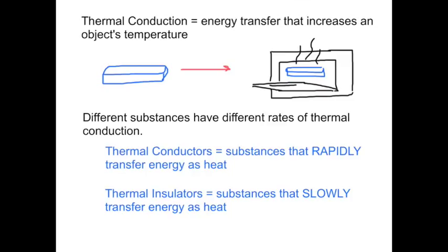Different materials have different rates of thermal conduction. Objects known as thermal conductors are substances that rapidly transfer energy as heat. In other words, they're quick to absorb and exchange heat.